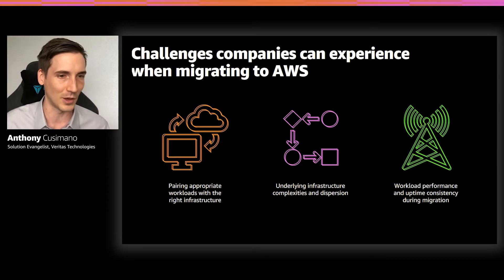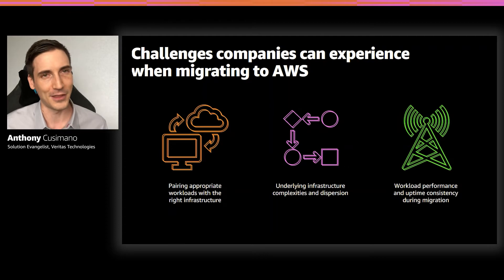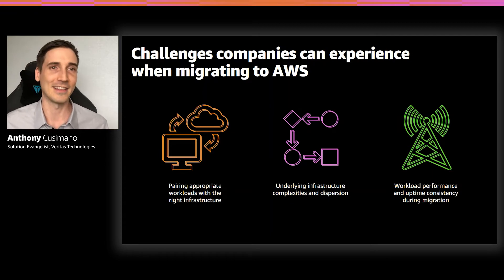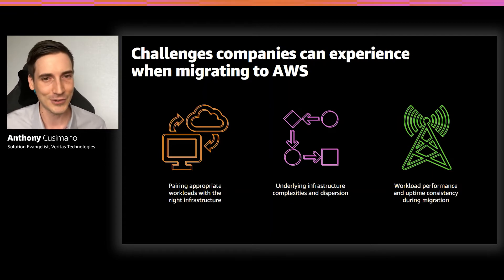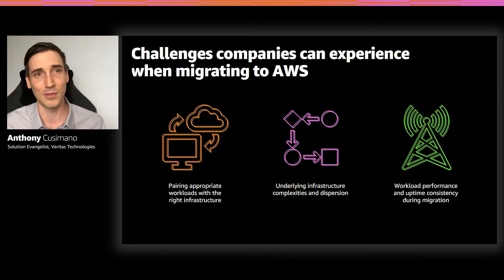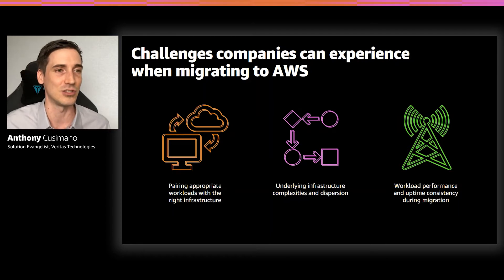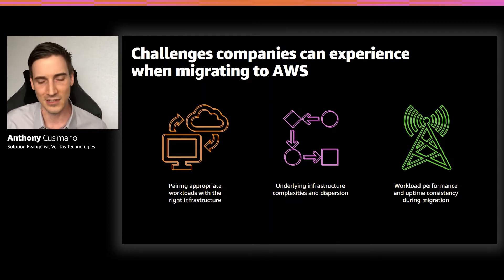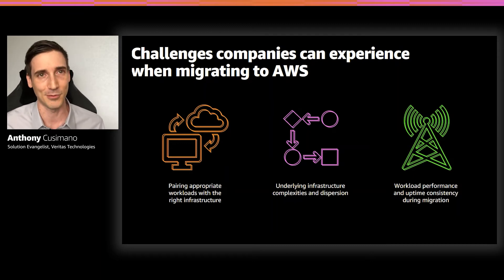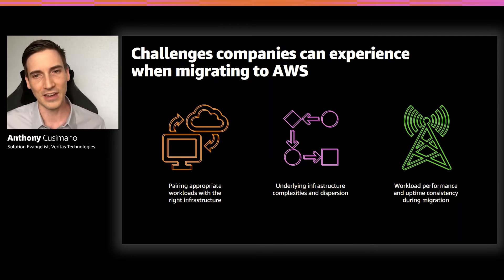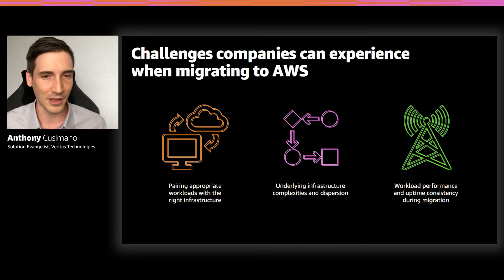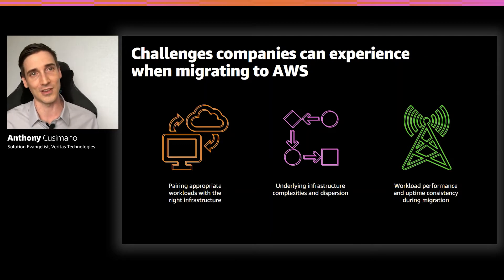First is pairing the appropriate workloads with the right infrastructure. It is paramount that you're not just copy-pasting what you have on-prem into AWS — that's not considerate of the application or the infrastructure. Amazon has many amazing opportunities for translation into better fits for their own infrastructure. Secondly, underlying infrastructure complexities and dispersion — things like networking and the overarching infrastructure containing your applications. Understanding how everything talks to everything else is very key before moving anything into AWS.